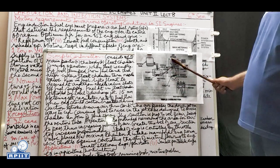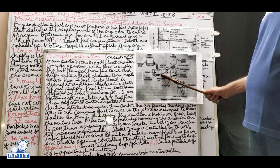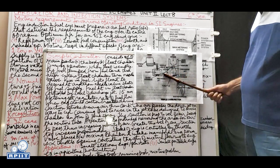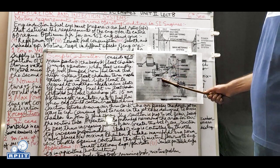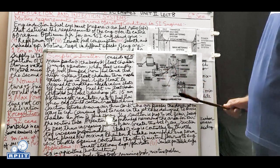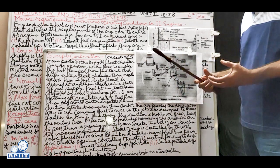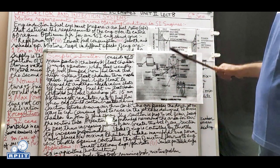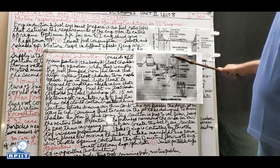The carburetor has two main parts: the float chamber and the main body. Air enters from outside through an air filter - the large round component on top of the carburetor - and passes into the carburetor. The venturi is a deliberately narrowed section to increase the velocity of air. A metering jet controls the amount of fuel delivered; more suction allows more fuel through, less suction allows less fuel.